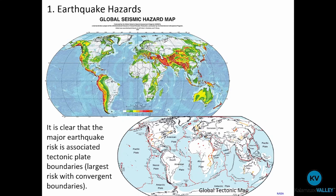Thinking about those forces at play — those stresses, compressional, tensional, and shear or friction — it makes sense that we see the largest risk, or largest amount of hazards, associated with convergent boundaries and that compressional stress.